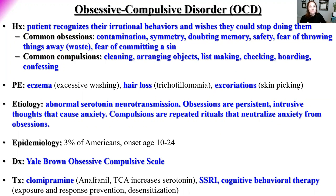The key difference between OCD and obsessive-compulsive personality disorder: people with OCD recognize they have the problem and wish they could stop. People with obsessive-compulsive personality disorder do not recognize that they have the disease, so they have no desire to stop. Common obsessions include contamination — fear of germs or being dirty — symmetry, doubting their memory, safety concerns like 'did I lock the door,' fear of throwing things away, and fear of committing a sin.